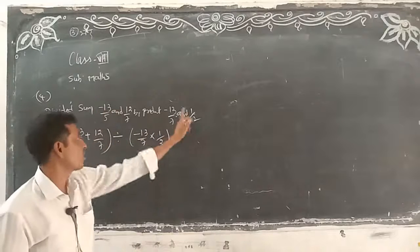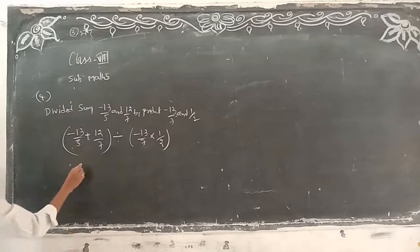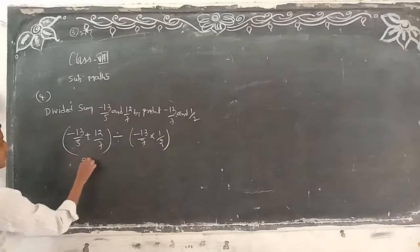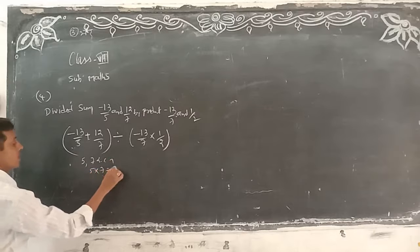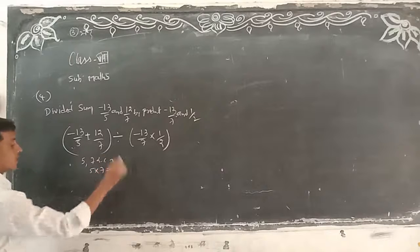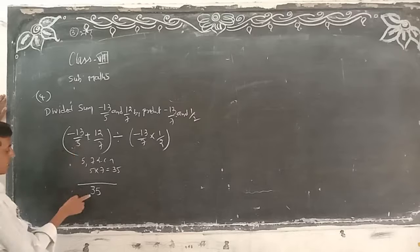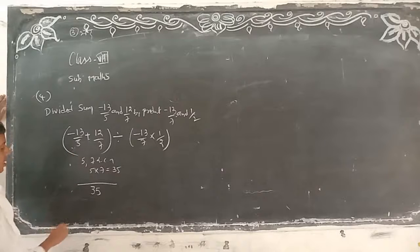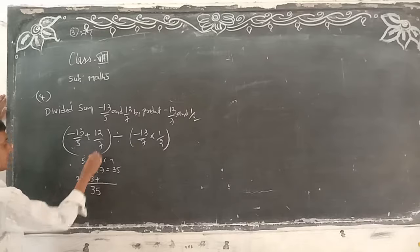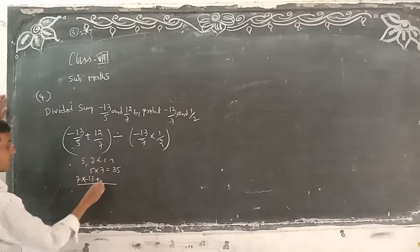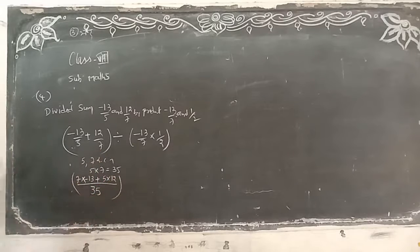So here for 5 and 7, take the LCM. It will not cancel. Write here 35. 5 table: 35 how many times? 7 times, into minus 13. Plus 7 table: 35 how many times? 5 times, into 12. Is it clear?